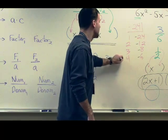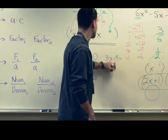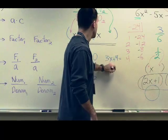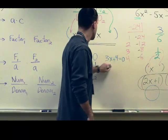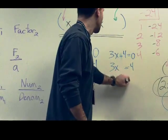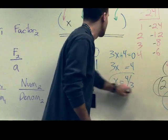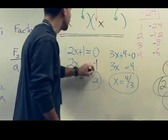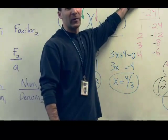3x minus 4 equals 0. That's 3x equals 4, and divided by 3, x is 4 thirds. So we have our two solutions for this trinomial equation.